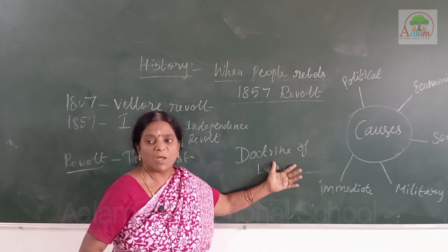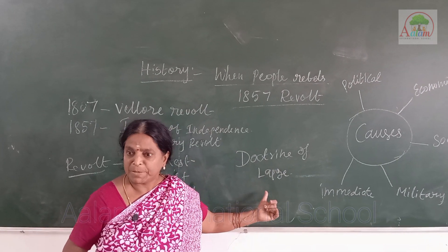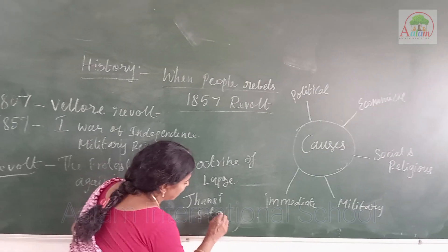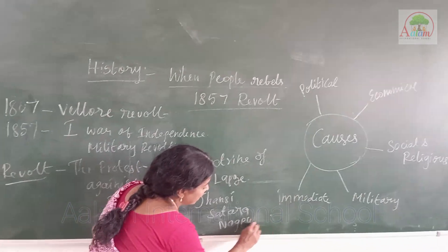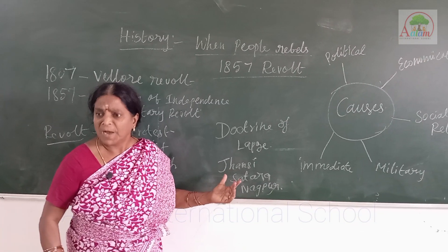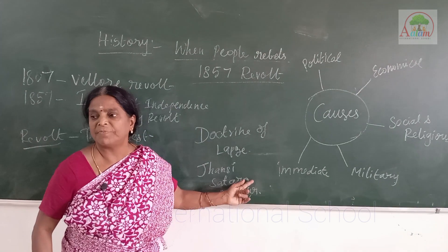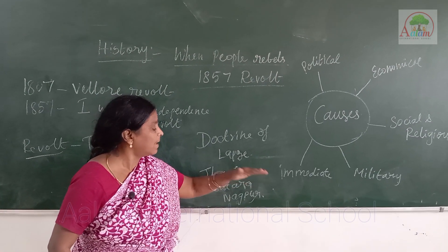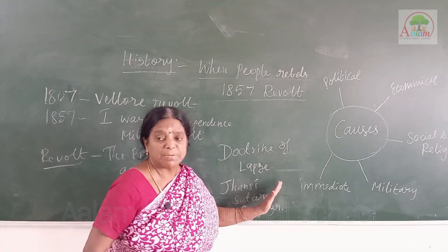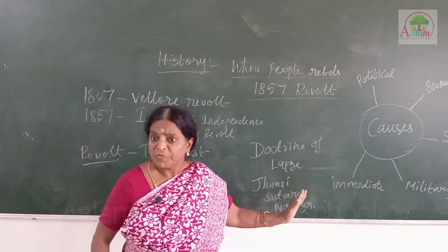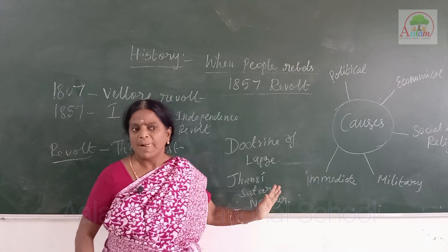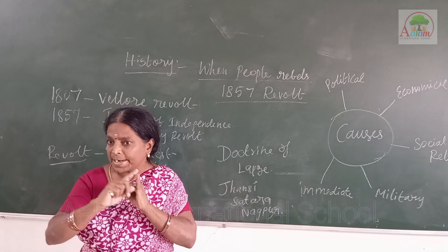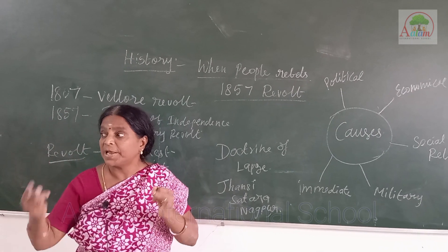The Doctrine of Lapse affected the kingdoms of Jhansi, Satara, and Nagpur. These kingdoms were annexed by Lord Dalhousie because their kings or queens did not have children and had adopted a son, so the adopted son could not rule the kingdom. Lord Dalhousie was a notable British Governor General — a very good yet aggressive person. He also introduced the Indian Railway and Indian Postal System in India.